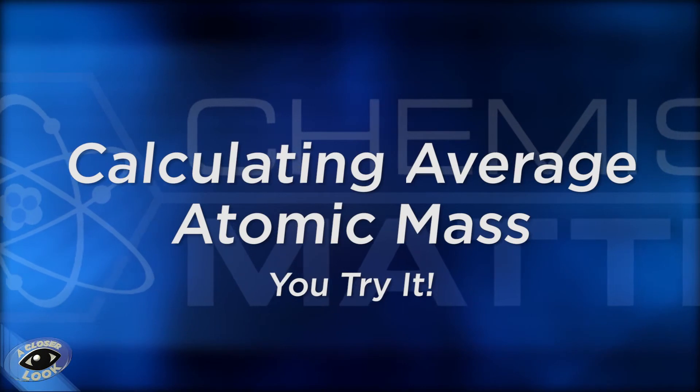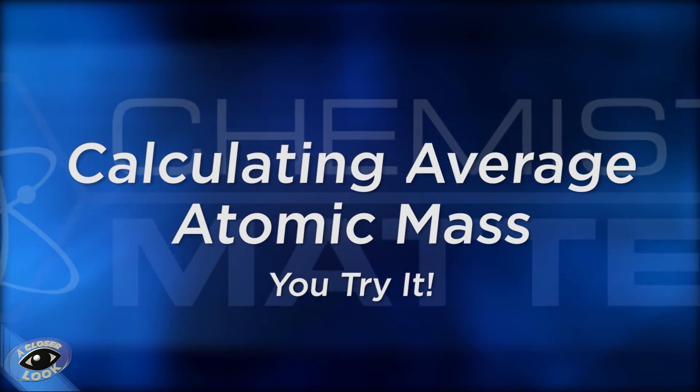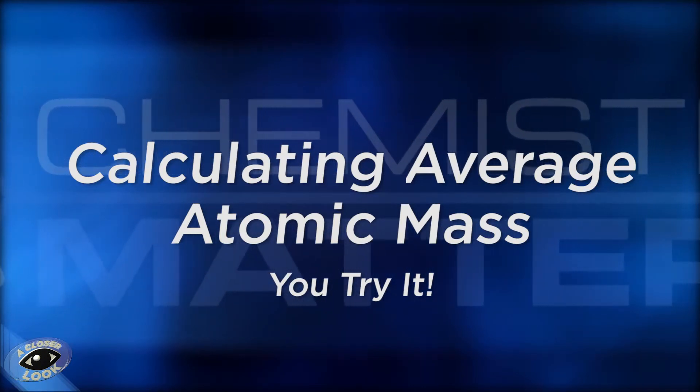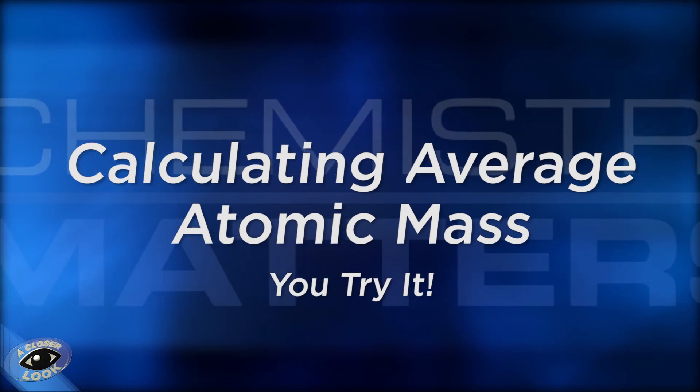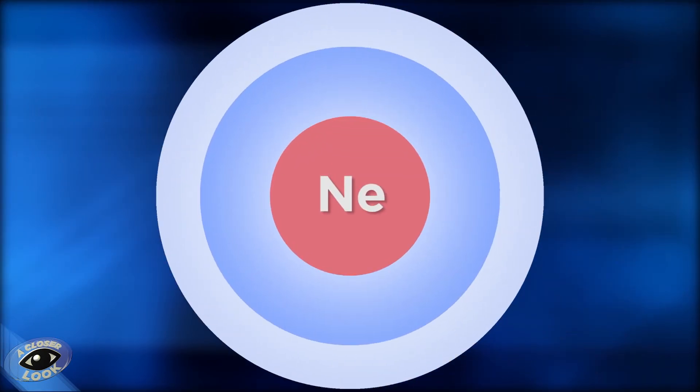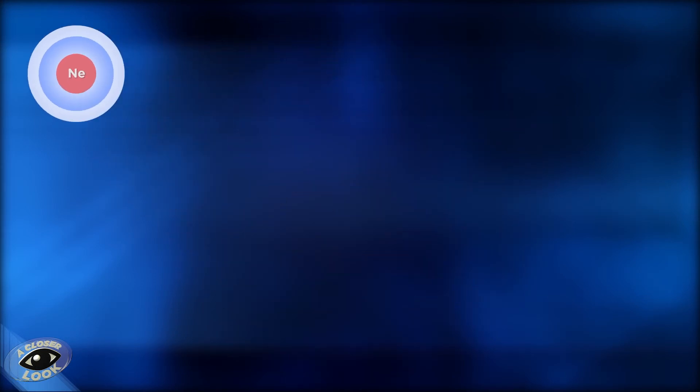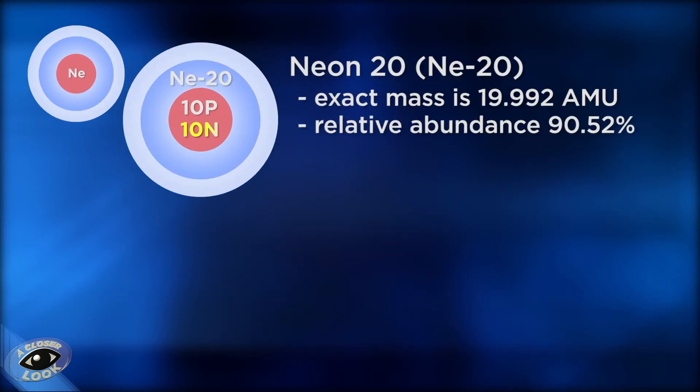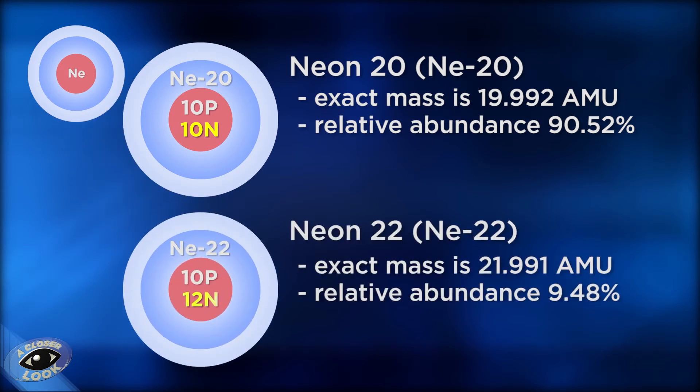Here's one for you to try. I'll give you the problem, and you press pause and solve it. Then, hit play and see if you got the right answer. Here's the problem. Almost all neon occurs naturally in two major isotopes. Neon-20, with an atomic mass of 19.992 AMU, and neon-22, with an atomic mass of 21.991 AMU. What is the average atomic mass of neon?